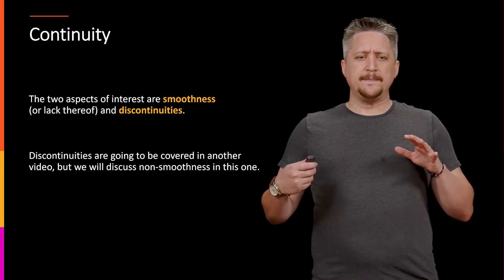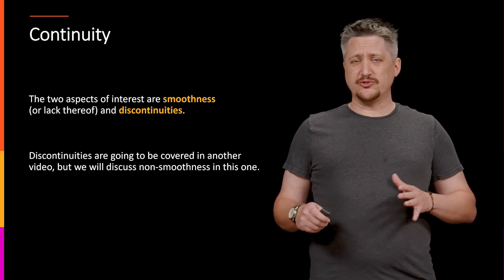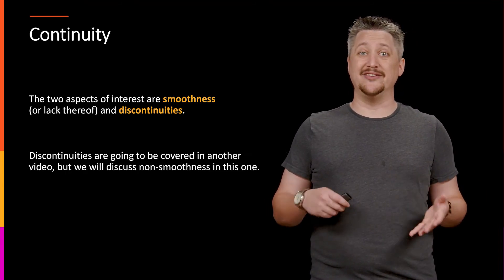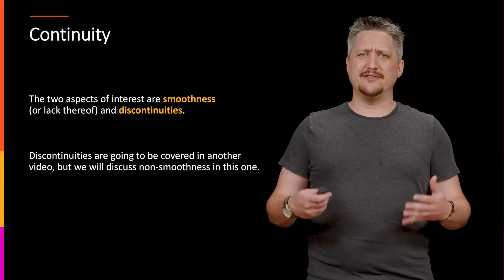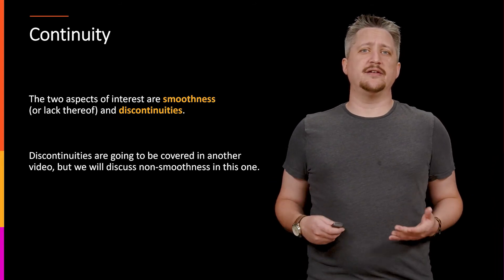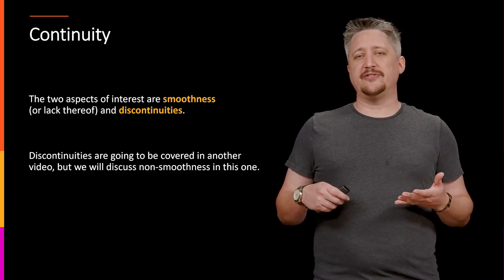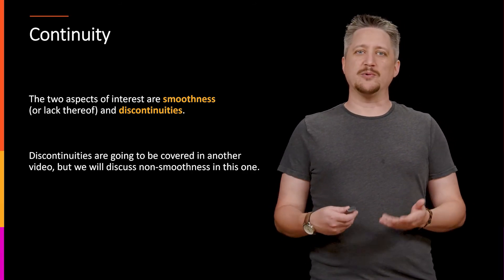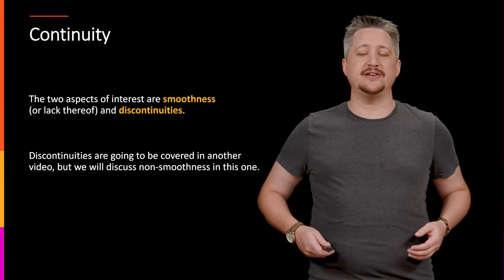So the discontinuity bit, the types and such, those are going to be covered in another video. In this one we're going to be talking about smoothness and non-smoothness. And this is really to get a feel for, again, leading into Calc 1, where you can have stuff that is continuous but not nice in some way. And that's what we're going to be talking about at least geometrically in this video.